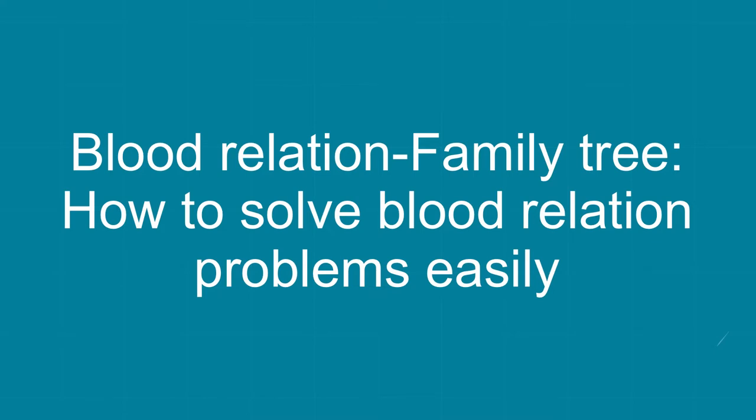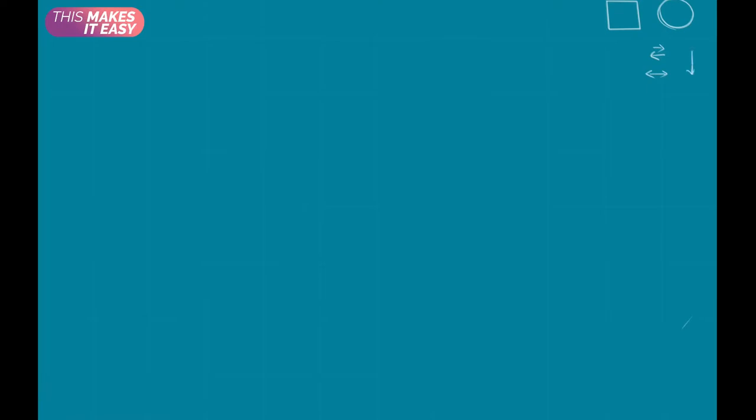Before solving any questions related to blood relations, we are going to explain the relationships between different members of a family through a family tree. There are some notations you should be familiar with. Males will be represented by rectangles and females by circles. Marriage will be noted by a specific notation, brother and sister by another notation, and generations will be indicated accordingly.